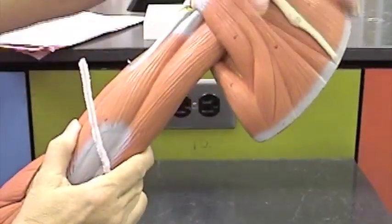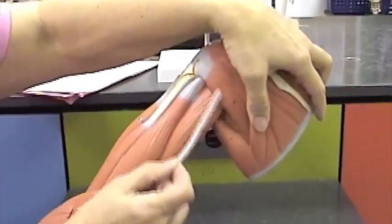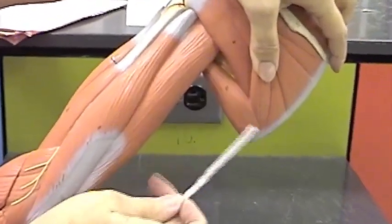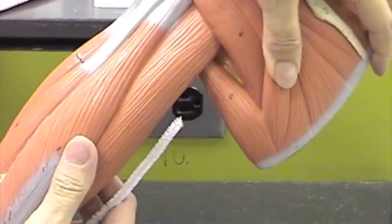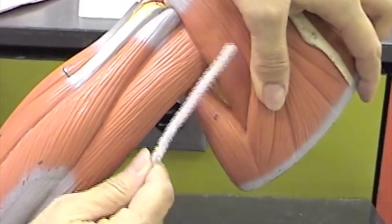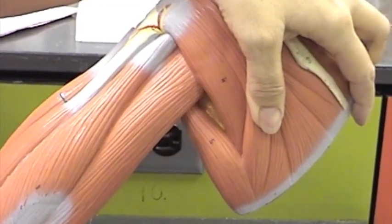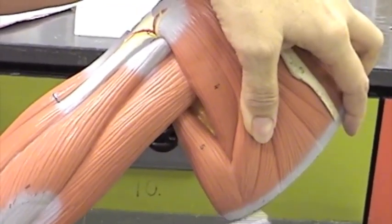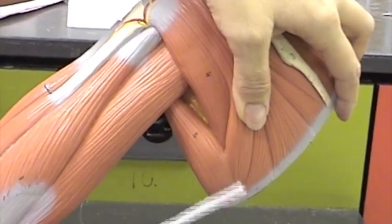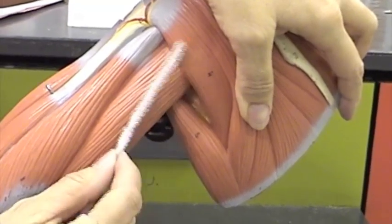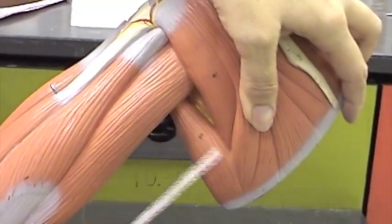We have two muscles remaining. Those are both teres muscles. Teres muscles mean that when they are cut on their belly, like right there, they appear round. The bisected muscle appears round. One is a major. This is teres major, and this is teres minor. Teres minor is superior to teres major.